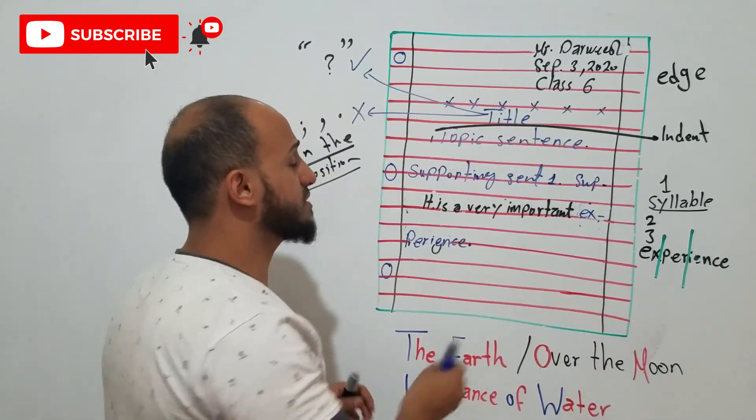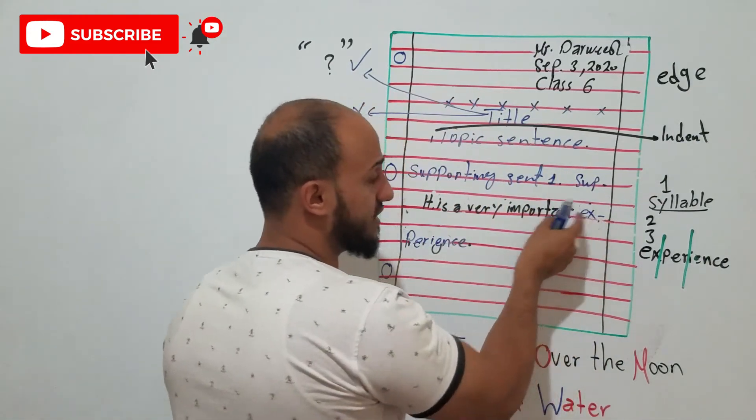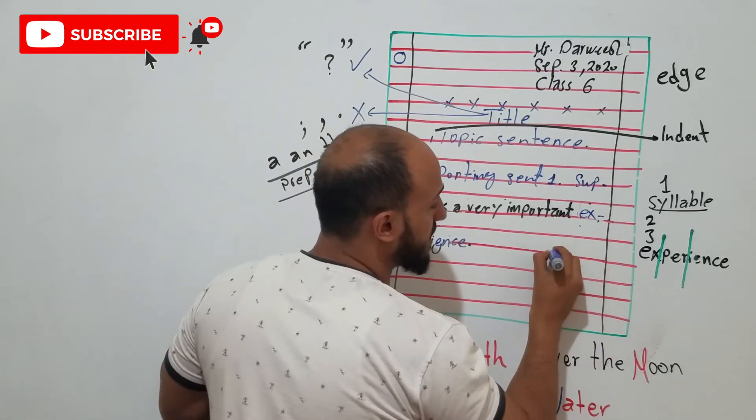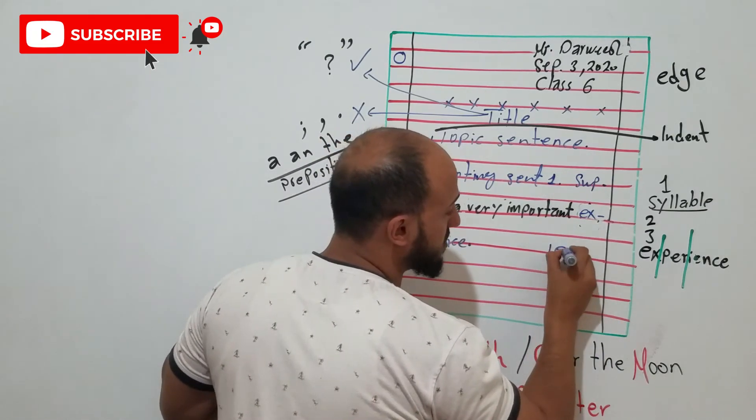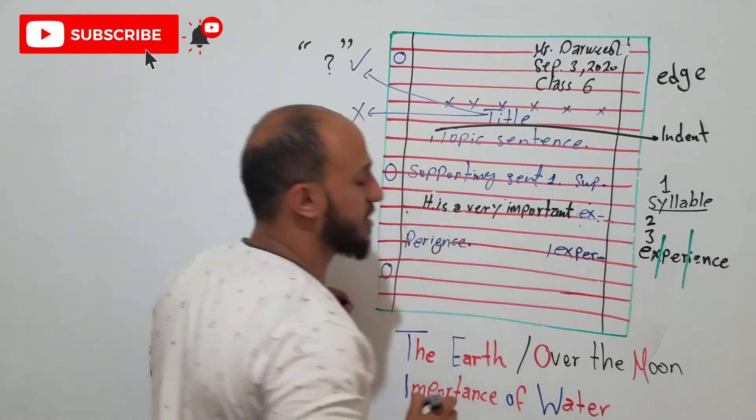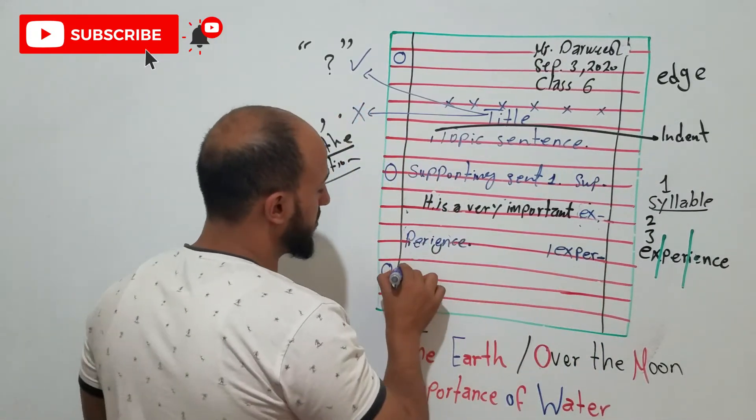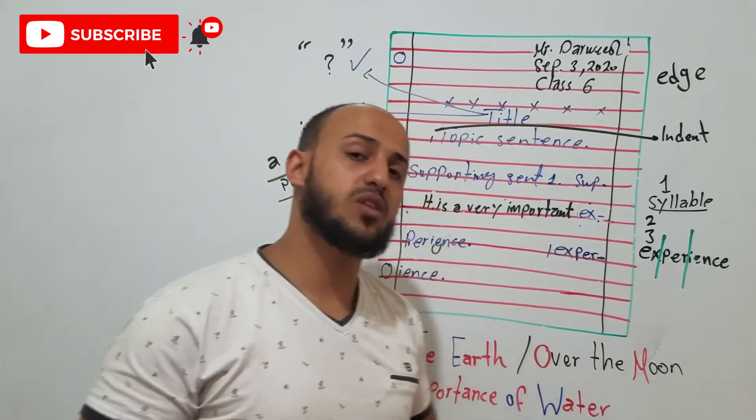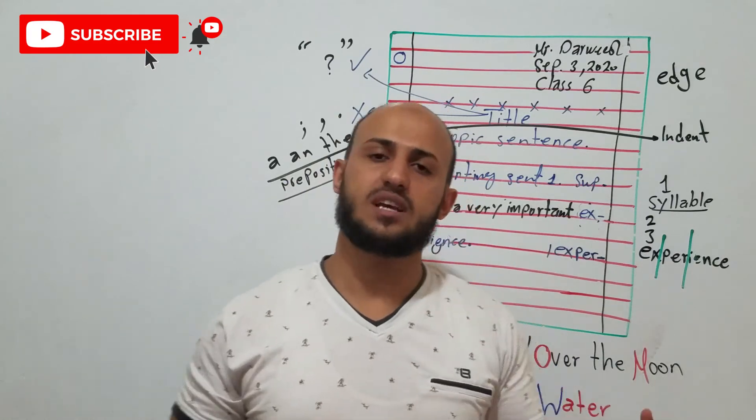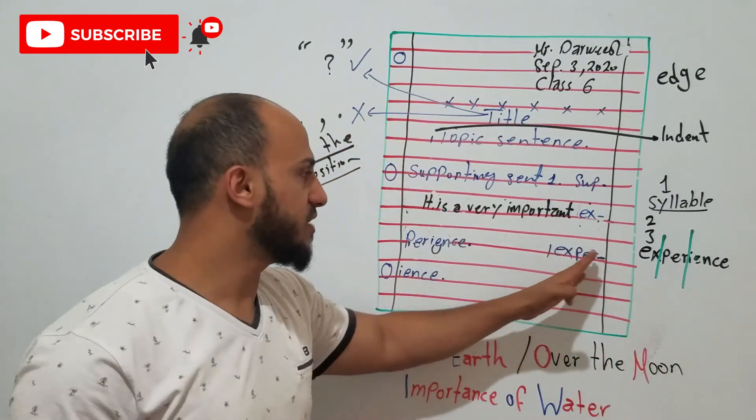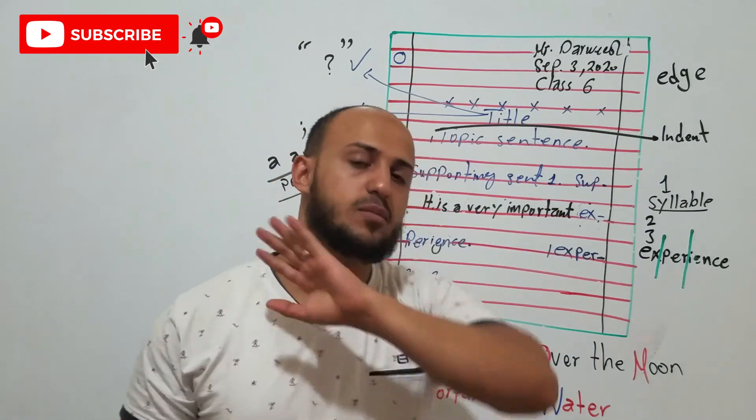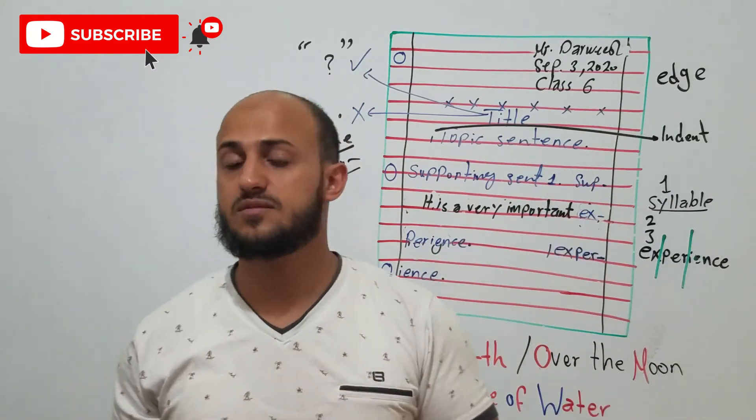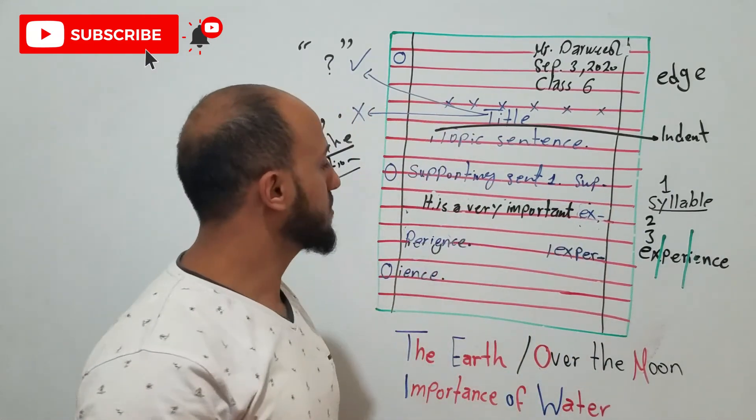The second way, sometimes the place here is longer than this. So, what you have to do is you do this one. I will make it here. So, for example, let's imagine this is the space. So, we write, exper, make a hyphen, then here, ience. So, experience. If the word has two, three, four syllables, five or whatever, you can divide it. But, if the word is one syllable, no. If you have enough space, write it. If you don't have enough space, move to the next line. That's all about it.